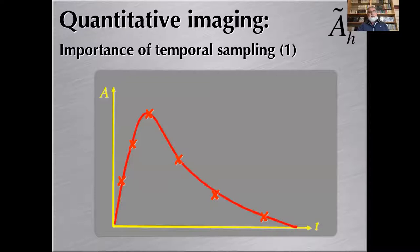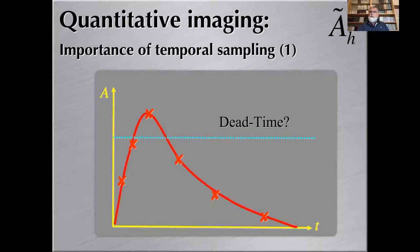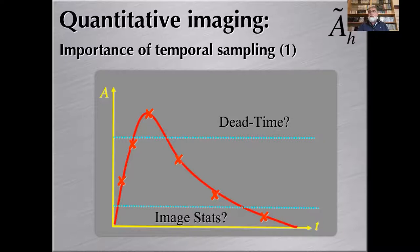We want to sample the time activity curve, and obviously the temporal sampling is going to be very important. You can see here the variation of activity as a function of time sampled by six time points. We have to pay attention to different aspects in the pharmacokinetics. Because we are in a context of therapy using quite high activities, dead time may occur especially at early time points. We have to identify the possibility of dead time and do the required corrections. On late images, we may suffer from the lack of statistics due to the decrease of activity.